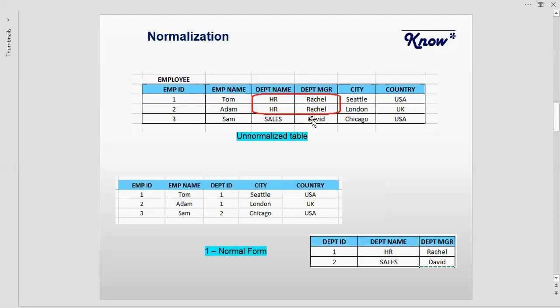Now if I want to find the name of the manager of the department to which employee Tom belongs, I can go to my table, identify the department ID for Tom, and then based on that ID get further details by joining to the department table. This is your first normal form — avoiding repeating values in your table.